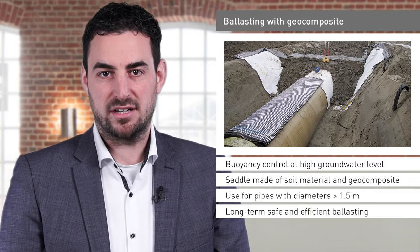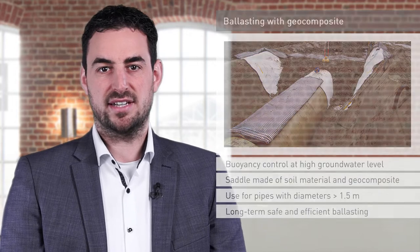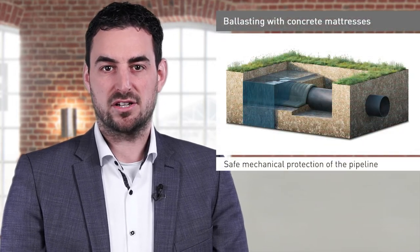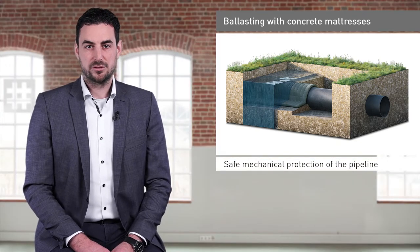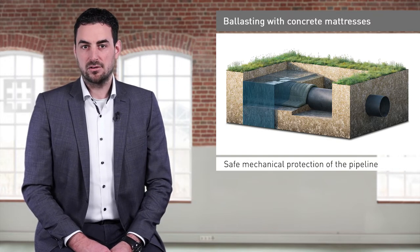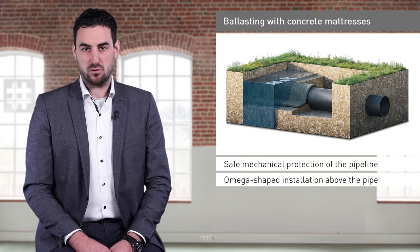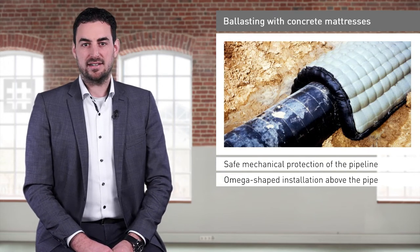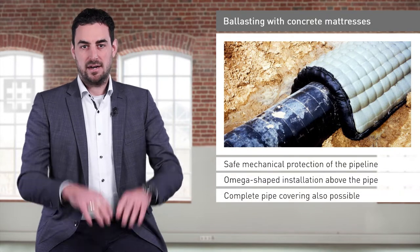We are happy to assist you with the calculation of the required tensile strength and the selection of a suitable composite. An alternative option is the use of concrete ballasting. By using concrete, a pipeline cannot only be ballasted but also simultaneously protected against mechanical damage. The concrete ballasting can then either sit on the pipe in an omega shape, analogous to the activation of the soil zone above the pipe as described earlier, which is predominantly used for retrofitting of in-situ pipelines, or be designed as a pipe casing.